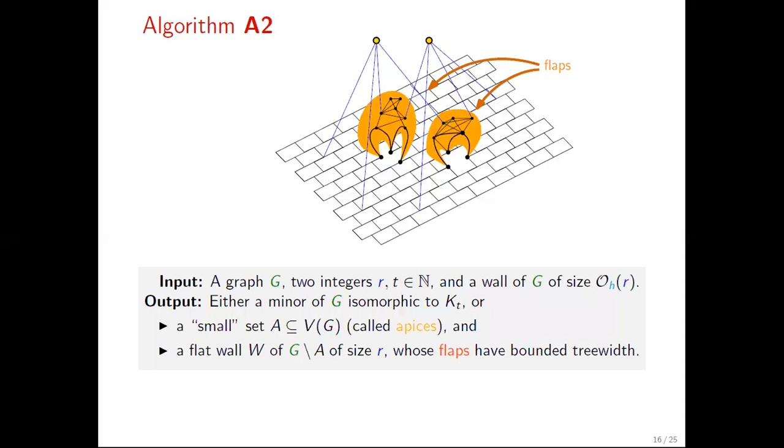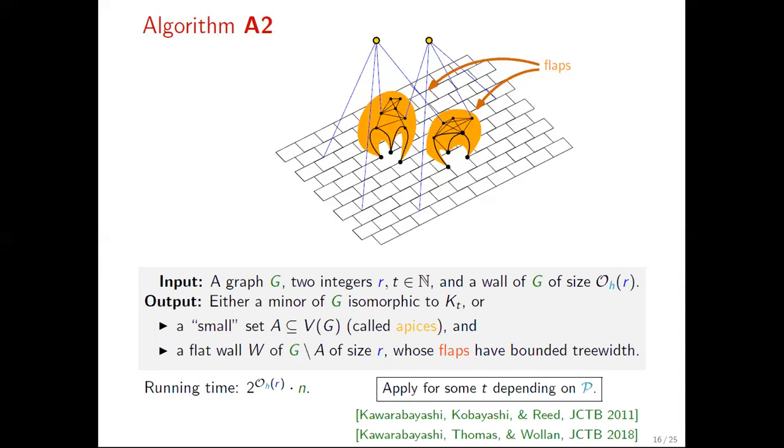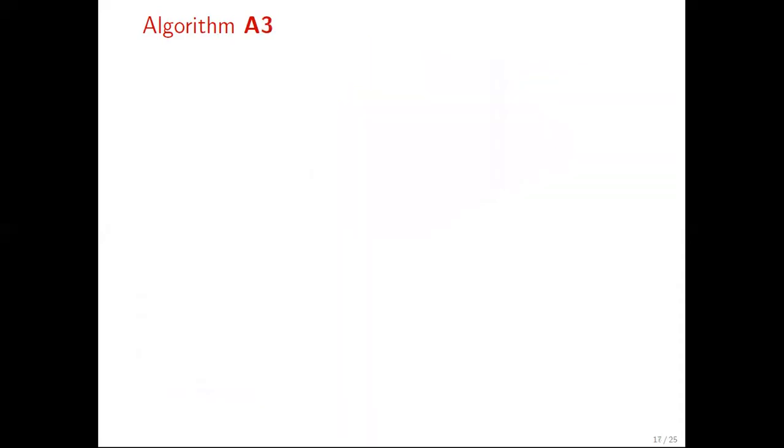More formally, given a graph G, two non-negative integers r and t, and a wall of G of size linear in r, algorithm A2 outputs either a minor of G isomorphic to K_t, the complete graph on t vertices, or a small, in terms of k, set of vertices a, called apices, the yellow vertices in the figure, and a flat wall of G-a of size r, whose flaps have bounded treewidth. This algorithm runs in time single-exponentially in r and is derived from the work of Kawarabayashi, Thomas, and Wollan. We will use this algorithm for some t depending on P such that the first possible output, the complete graph on t vertices, is a certificate that we deal with a no instance.